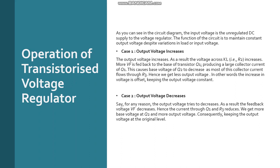As the output voltage increases, the voltage across resistance R2 increases, which provides more feedback voltage to the base of transistor Q1. This is the error amplifier, which produces a large collector current of Q1. When collector current increases, the output voltage decreases. The base voltage of Q2 decreases, as Q2 is connected to the collector of Q1. Since most of this collector current flows through R3, we get less output voltage, offsetting the increase and keeping the output voltage constant.